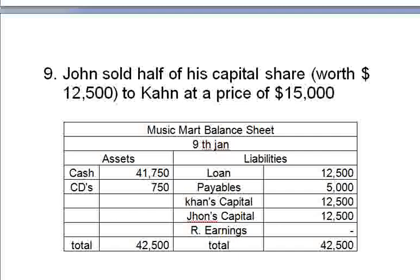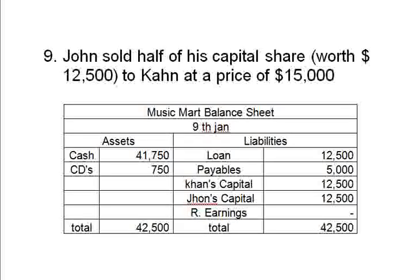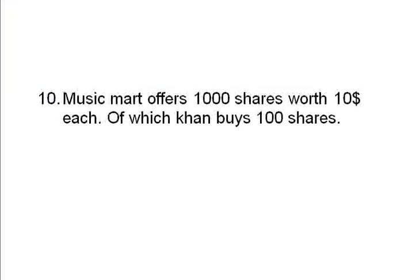So far we have seen what happens in a privately owned company, what kind of transactions occur, and how they are recorded in a balance sheet. Now we'll see a case where this business goes public and issues some shares. Transaction number 10: MusicMart offers 1000 shares worth $10 each, of which Khan buys 100 shares.